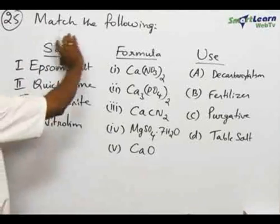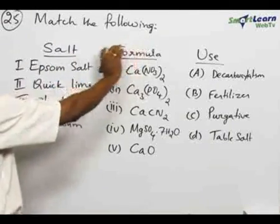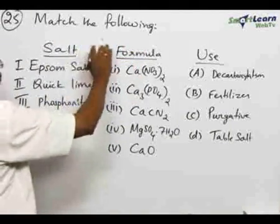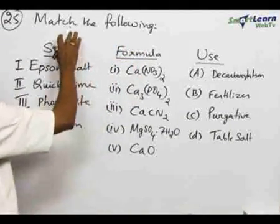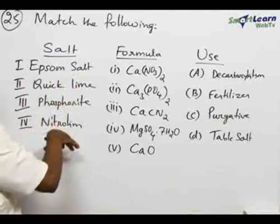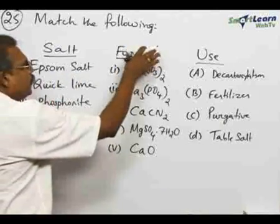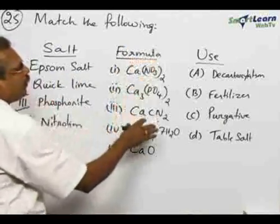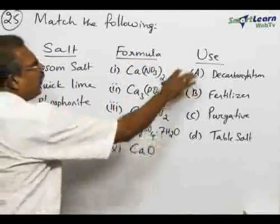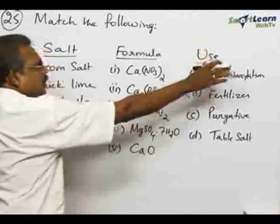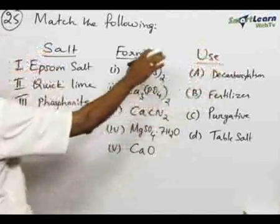Number 25, match the following type. Here three columns: column number 1 has the name of the salt, column number 2 has the formula, and column 3 has the use of that substance.